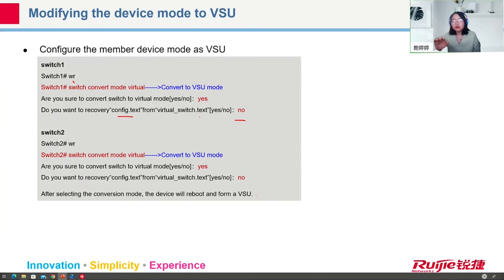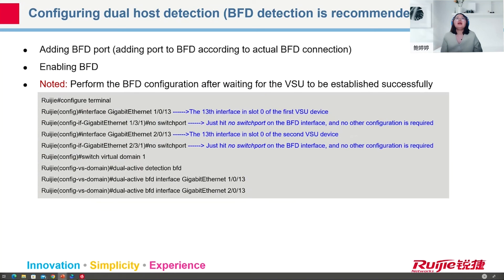Important: during the reboot period the devices cannot forward traffic, so inform customers about this maintenance window. After VSU is established successfully, configure dual-active detection using BFD. Add the BFD port and enable BFD — but only after VSU is established. Enter the interface, change it from Layer 2 to Layer 3 using 'no switchport', then in the VSU domain configuration use 'dual-active detect bfd' and specify the BFD interface. BFD consumes some device resources.